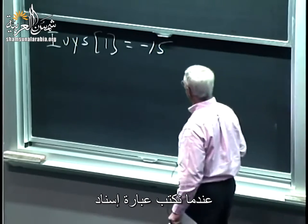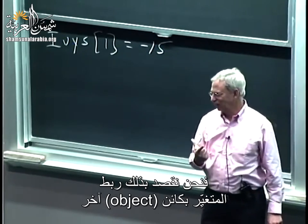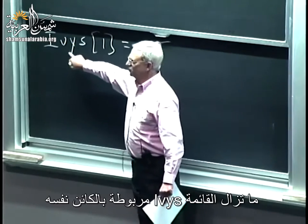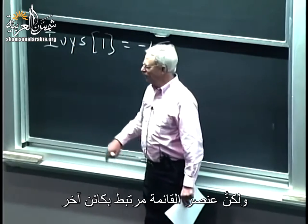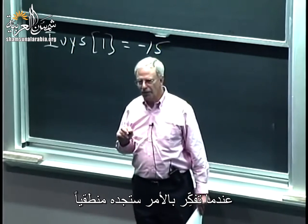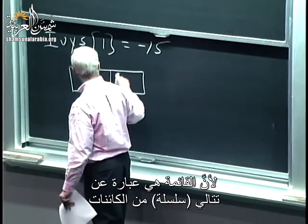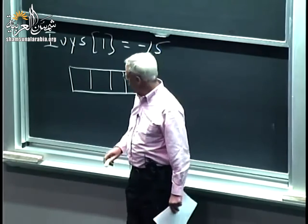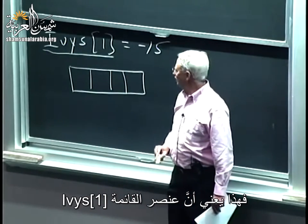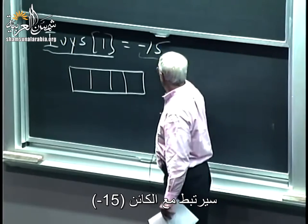Heretofore, when we wrote assignment, what we always meant was changing the binding of a variable to a different object. Here we are overloading the notation — IVs is still bound to the same object, but an element of IVs is bound to a different object. When we have a list, what a list is, is a sequence of objects. The object named by IVs sub 1 is now bound to the object named by the constant minus 15.